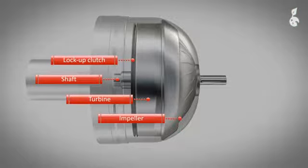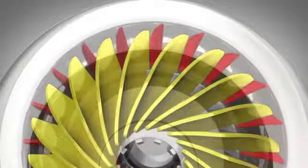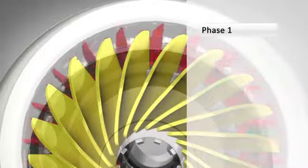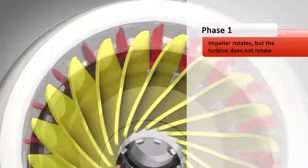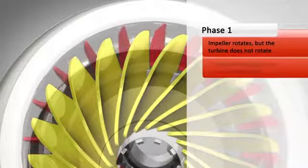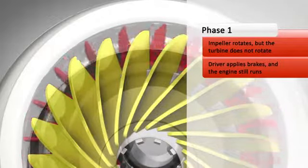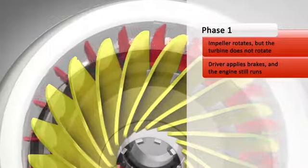Torque converters have three stages of operation. The first phase is called stall. Here, the engine applies power to the impeller, but the turbine does not rotate because the driver keeps his or her foot on the brake at traffic lights. So the vehicle does not move.